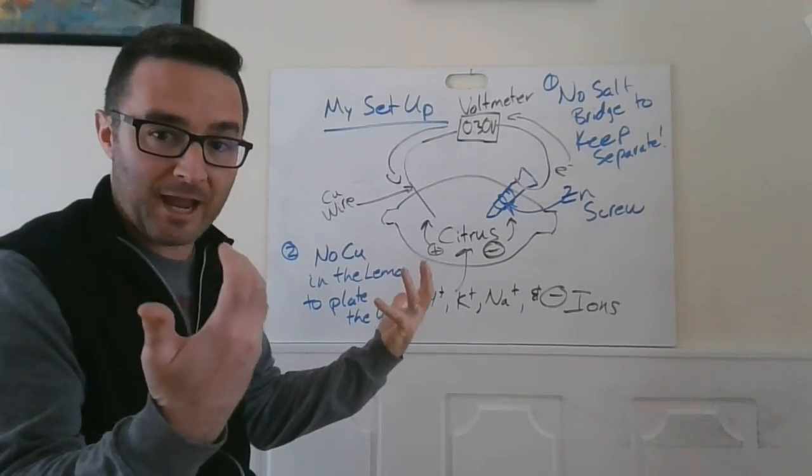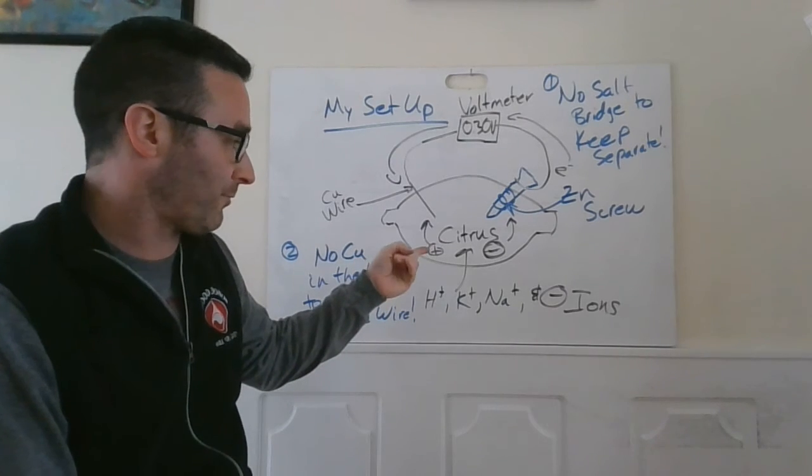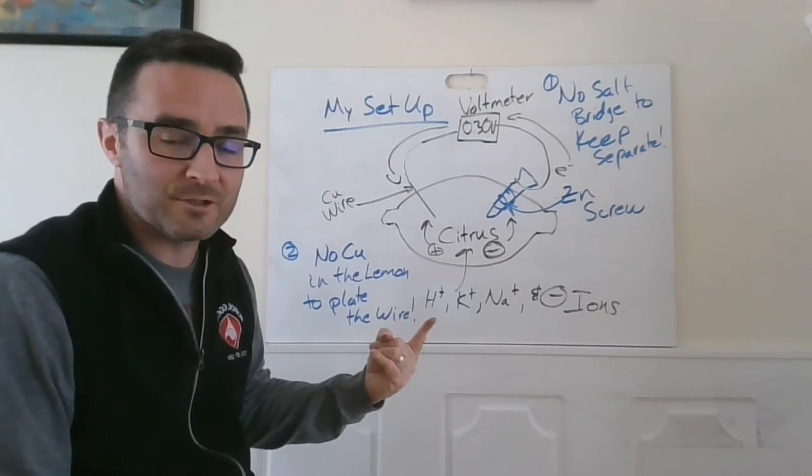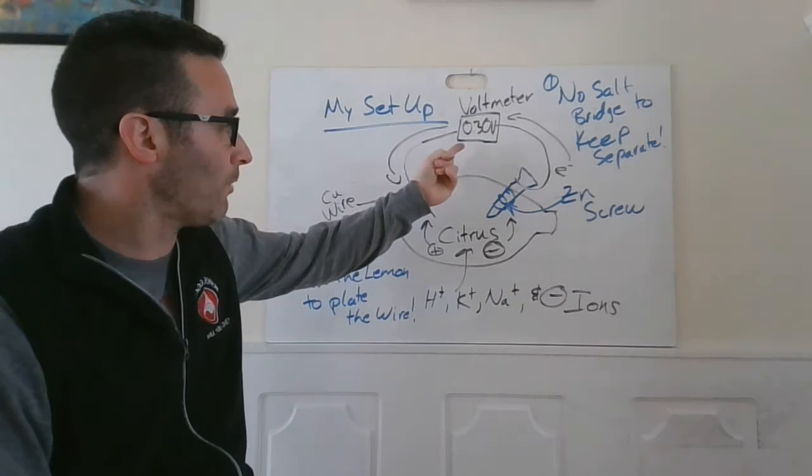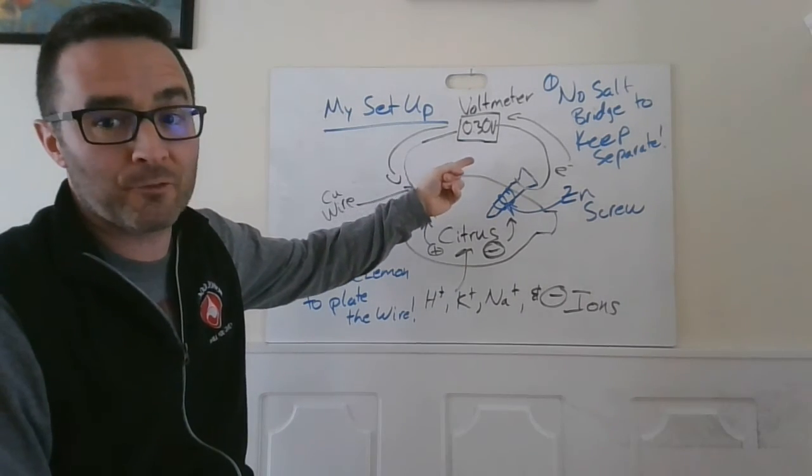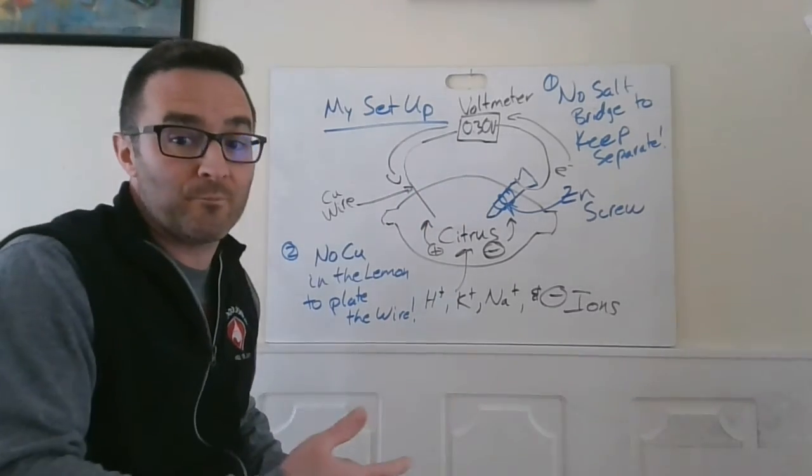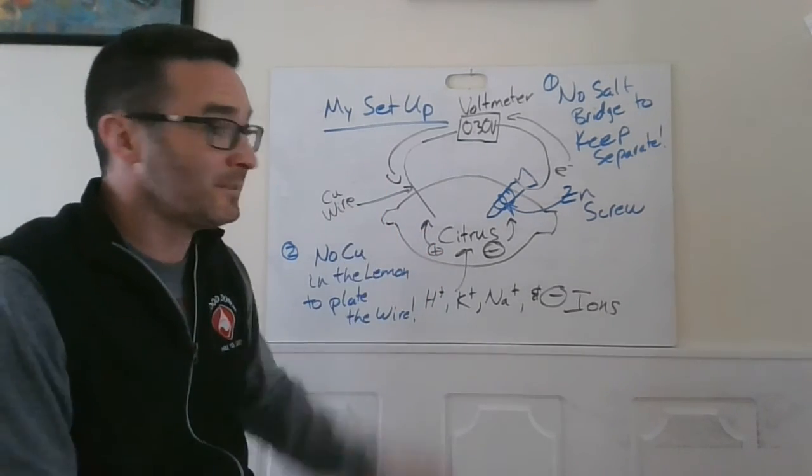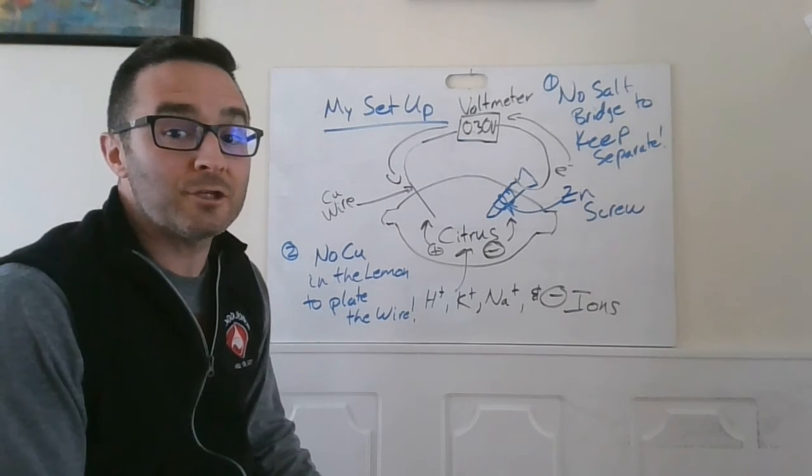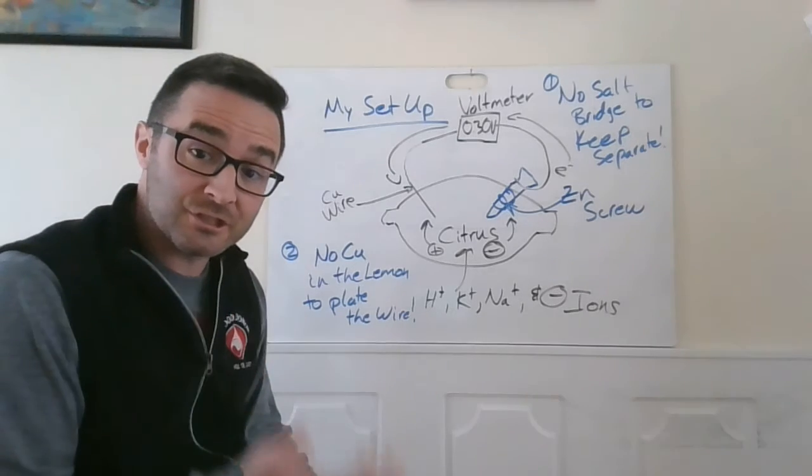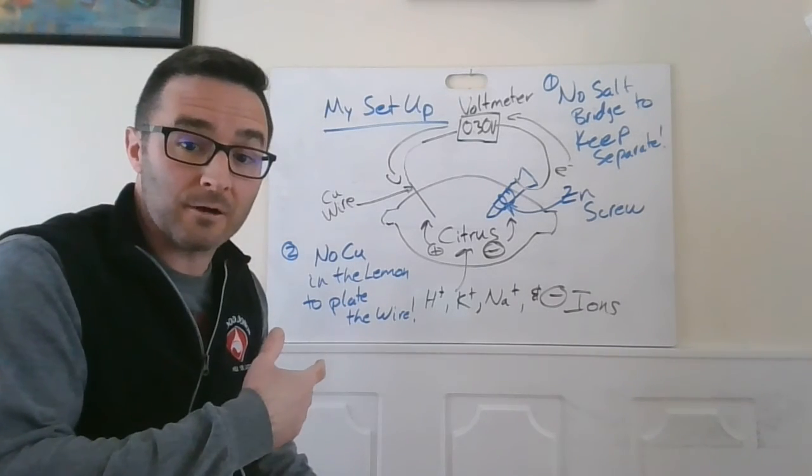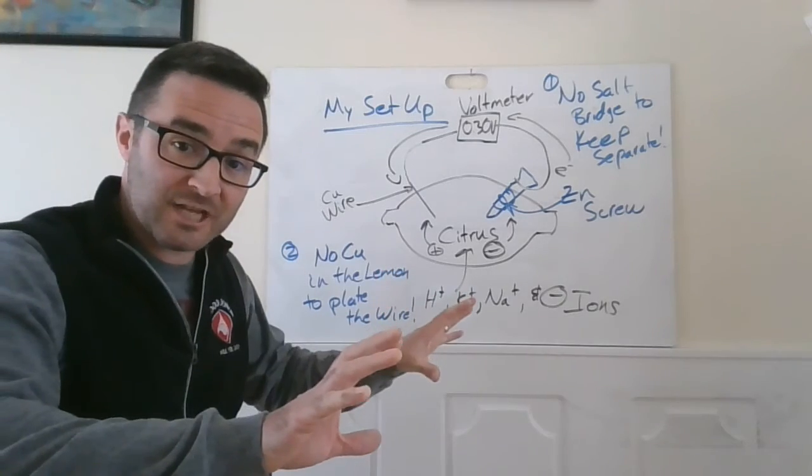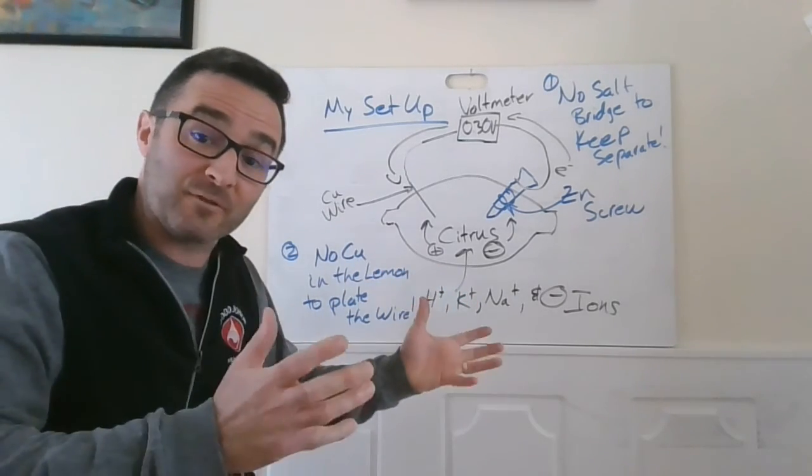So between the lack of a salt bridge to keep these reactions separate and the fact of, unless if there's more copper in a lemon or a lime than we're aware of, you don't have enough to keep this going. So we saw 1.1 volts possible, and at a max we were getting 0.3. And you're going to run out of potential really quick, because without any copper to come in here to accept those electrons, you're going to run into difficulty pretty quickly. But you at least have enough juice to get started and have some electrons flow.